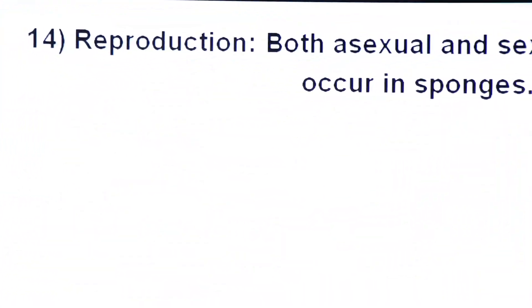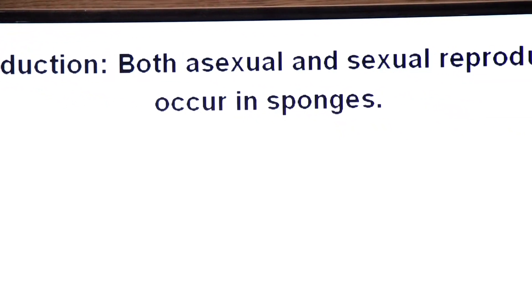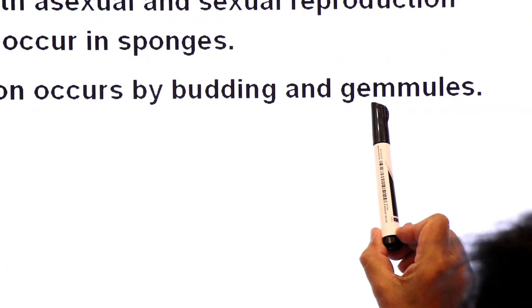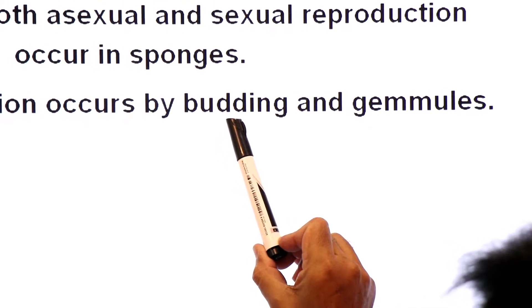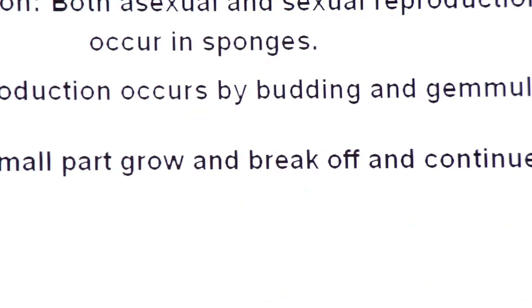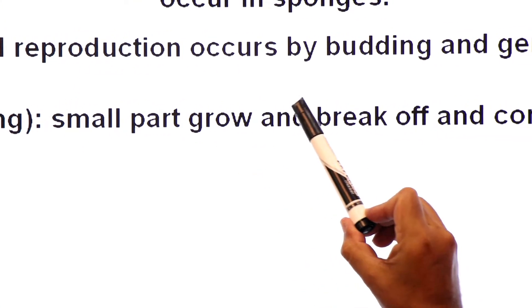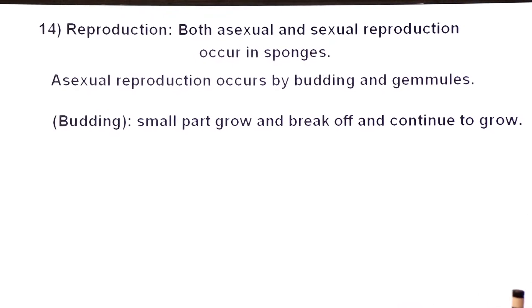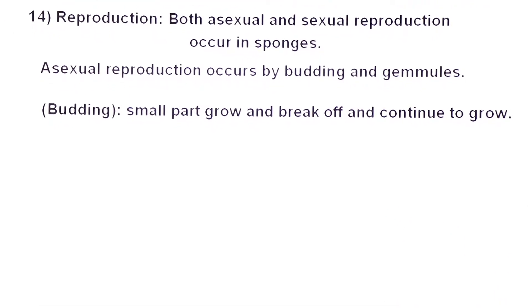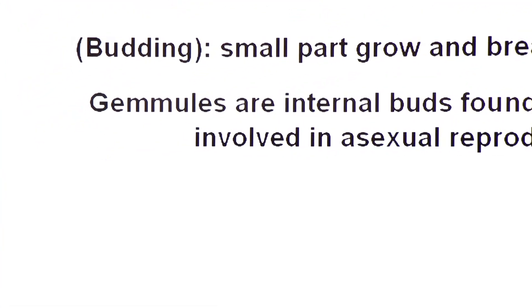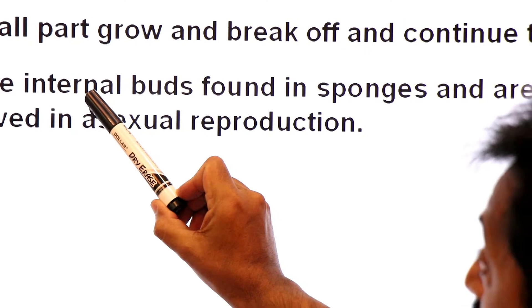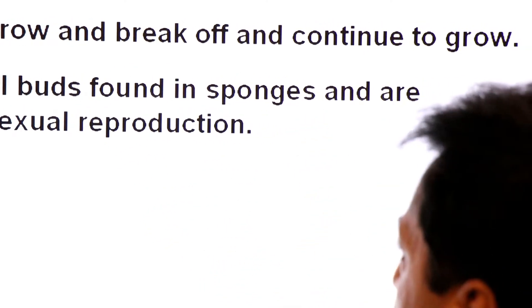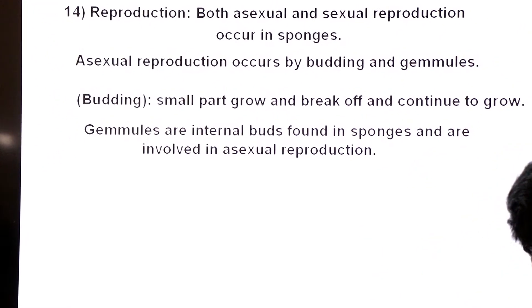Regarding reproduction of sponges, they reproduce by both sexual and asexual means. Asexual reproduction occurs by budding — a small part grows and breaks off and continues to grow — and by gemmule formation. Gemmules are internal buds, also called endogenous buds, found in sponges and involved in asexual reproduction.